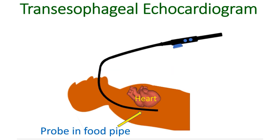Device closure of ASD can be done under local anesthesia in adults. In children who are afraid of the procedure, general anesthesia may be used. TEE may be used during the procedure to monitor the exact position of the device in the heart and ensure proper closure of the defect. TEE during the procedure will also tell if the device is impinging on any nearby important heart structures. If any such problem is found, the device can be repositioned or removed if necessary. If the procedure is successful, it avoids a major open heart surgery.